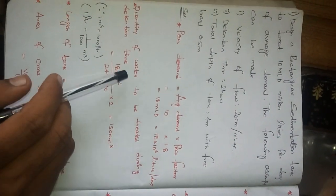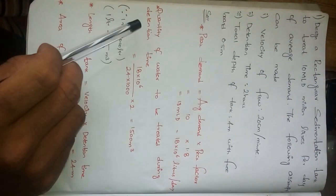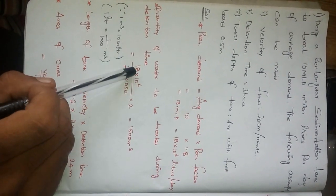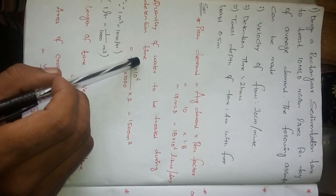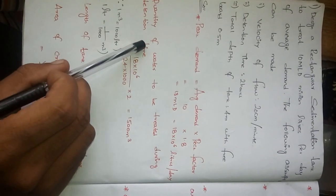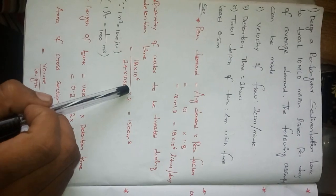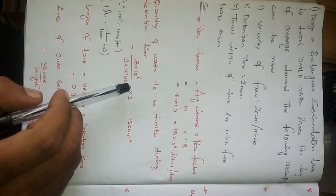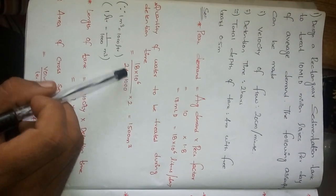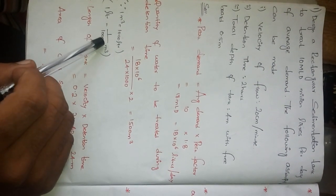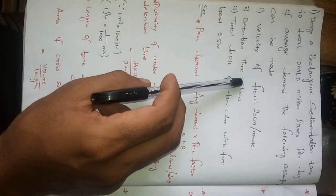Next point: we have to calculate quantity of water to be treated during detention time. Quantity of water to be treated during detention time is: detention time is 2 hours, quantity of water is 18 × 10^6 divided by 24 × 1000. Why are we dividing by 24 × 1000? Because per day we have 24 hours, and to find the volume we are taking 1 meter cube equals 1000 liters. For 1 liter, 1 by 1000, that is why we are taking 1000 here, times 2 where 2 is the detention time. This gives us 1500 meter cube.